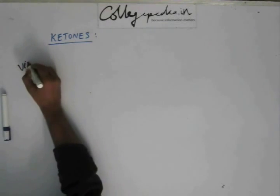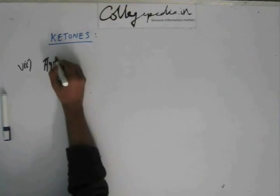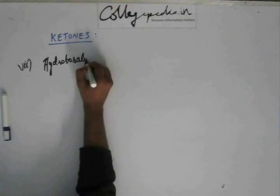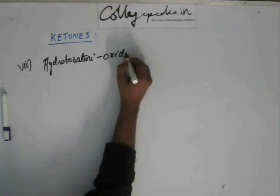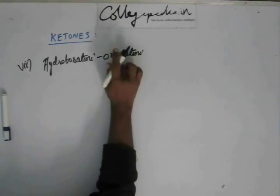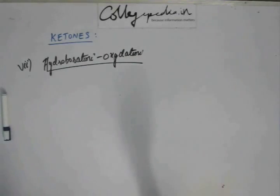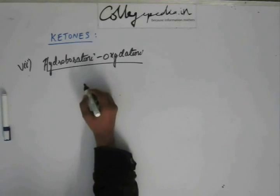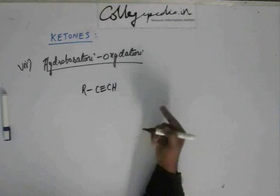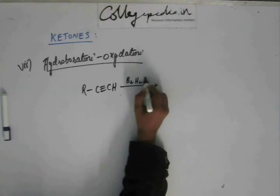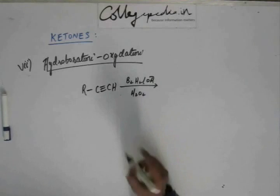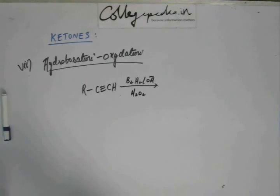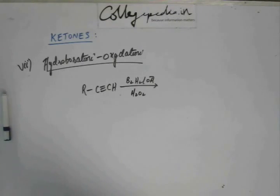Another reaction we have already studied is hydroboration oxidation. We studied it first in the chapter of hydrocarbons and again when we covered preparation of aldehydes. Hydroboration oxidation is a type of anti-Markovnikov addition. When there is a terminal alkyne, hydroboration oxidation results in an aldehyde.